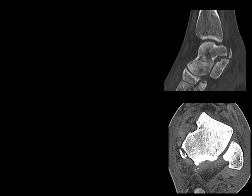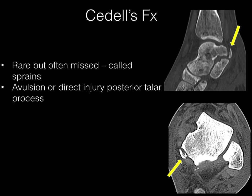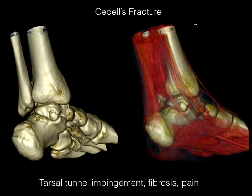Another fracture that is somewhat unusual is the Seidel's fracture. It's often called a sprain clinically, which is why it can be missed. It is an avulsion or direct injury of the posterior talar process. This can lead to chronic pain and instability if not identified, including flexor hallucis longus entrapment. A 3D CT example shows tarsal tunnel impingement, which results in fibrosis and pain.